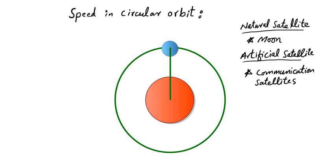Hello everyone, today we will discuss how we can calculate the speed of a satellite in a circular orbit. Generally we have two types of satellites: one we call natural satellites.